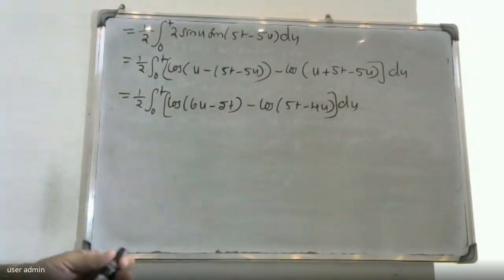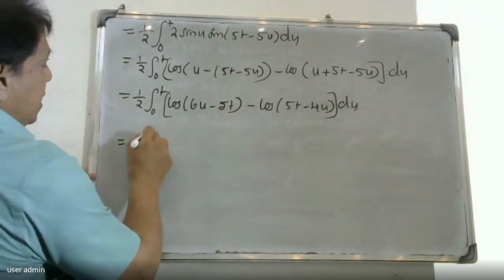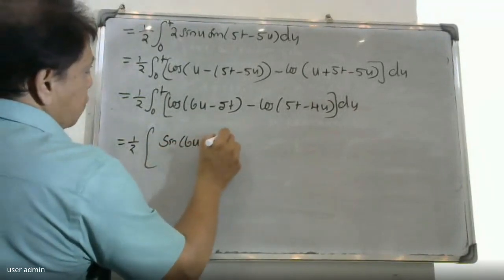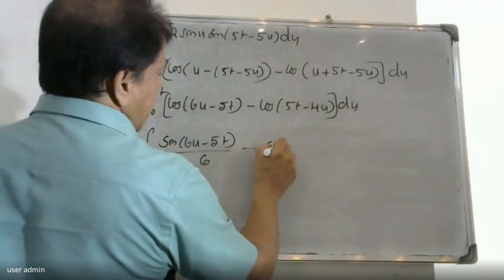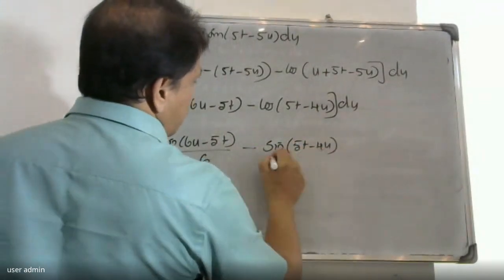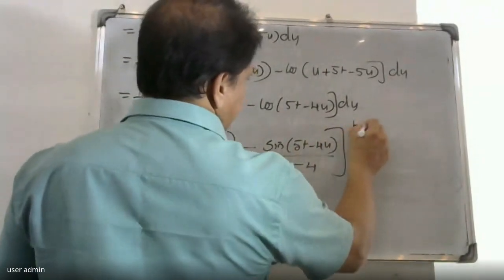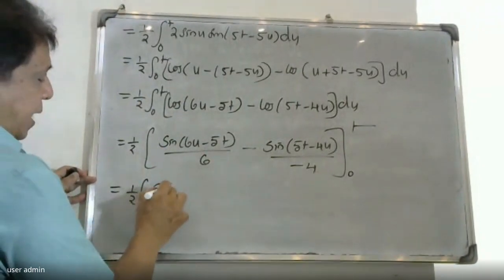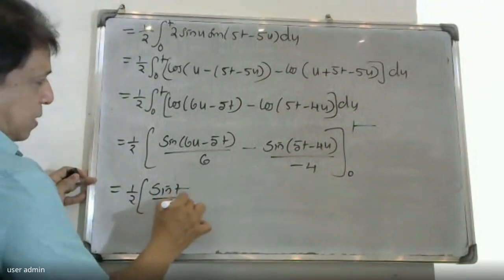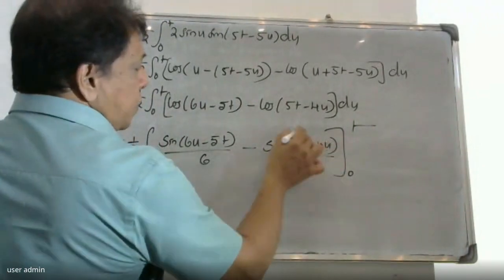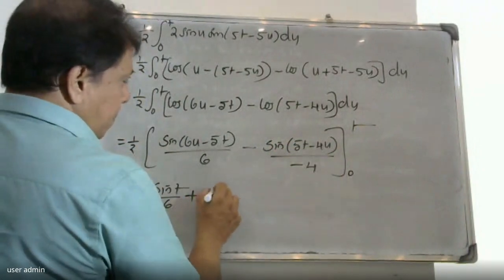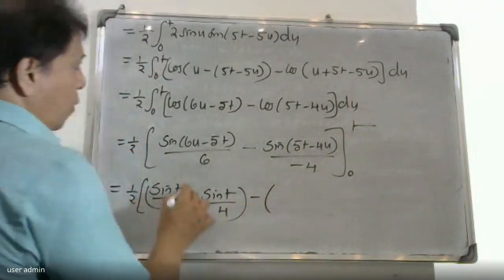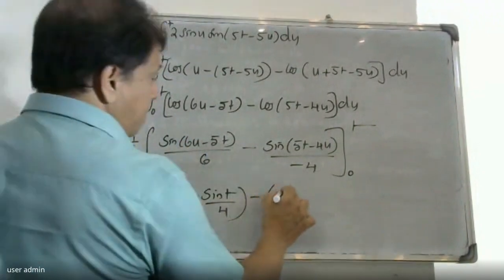That is equal to 1 by 2 into the integral from 0 to t of cos(6u − 5t) minus cos(5t − 4u) du. Integrating: sin(6u − 5t) divided by 6, minus sin(5t − 4u) divided by minus 4. That gives 1 by 2 into sin(6u − 5t) by 6 plus sin(5t − 4u) by 4.